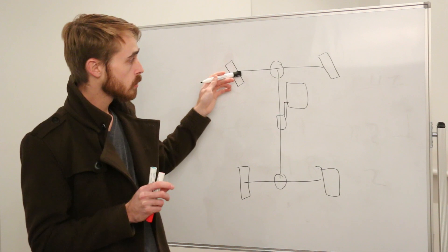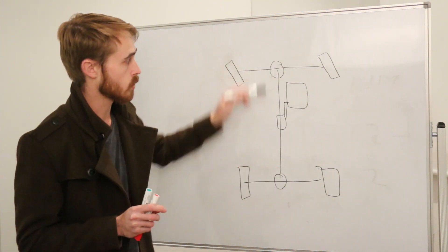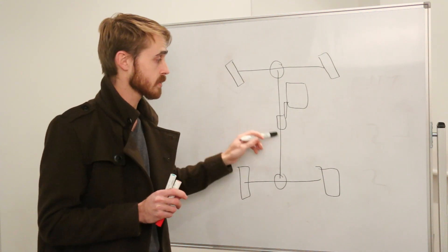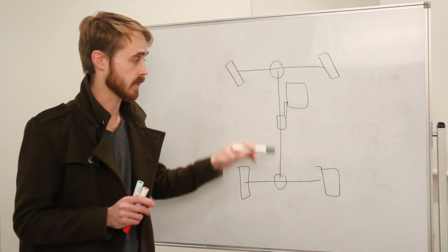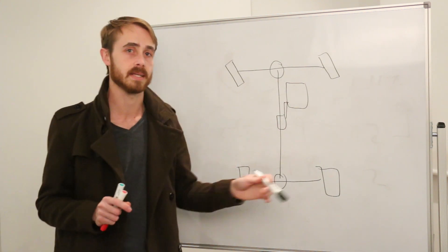So you need to consider that this differential here and this differential here are going to have slightly different speed outputs. So you need what's known as a center differential in the center to allow these speed outputs to vary, and the engine will feed into this center differential.